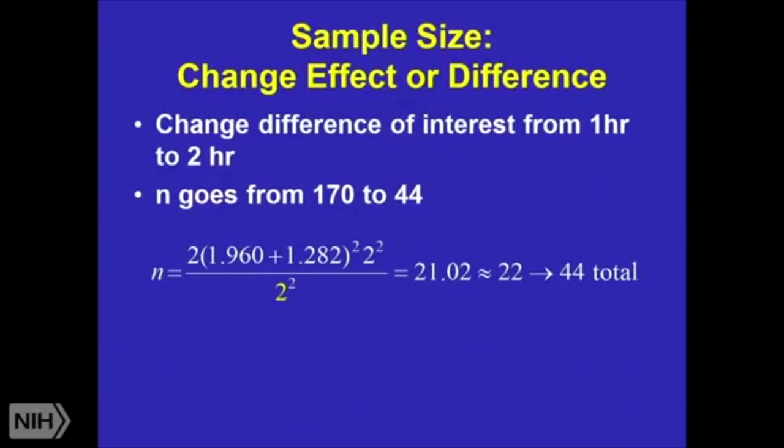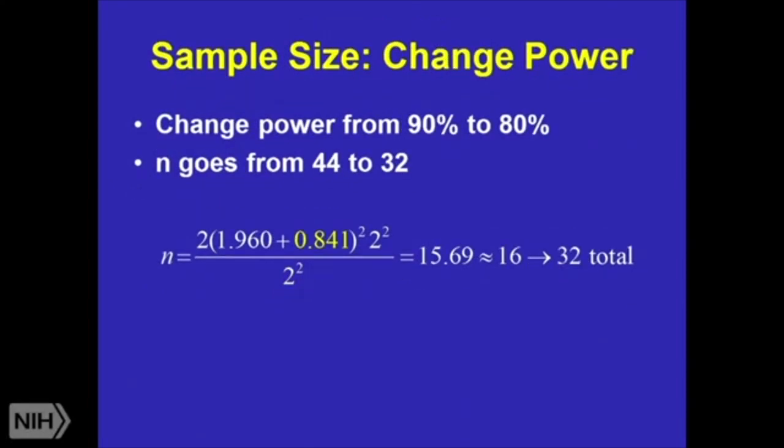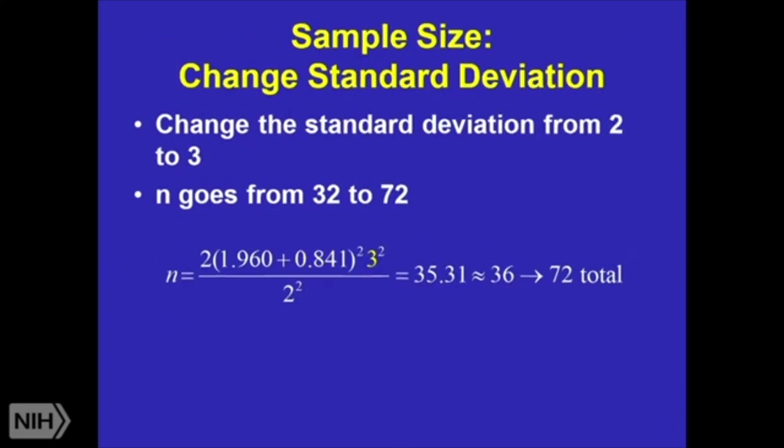So think about it again. You change the difference of interest from one hour to two hours. That 170-person study goes to 44 people total. Sounds pretty sweet. Changing my power from 90% to 80%. Sample size goes down to some more. My standard deviation maybe needed to be a little bit higher. My sample size has gone back up.